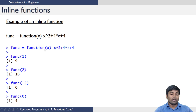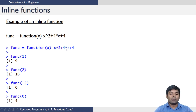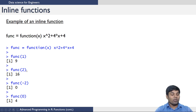To create an inline function you use the function command with argument x and then the expression of the function. Once you create this, you can call it directly at the command prompt. For example, function(1) takes 1 as the argument: 1 squared is 1, plus 4 times 1 is 4, plus 4 gives 9. Similarly you can get outputs for different arguments as shown on screen.